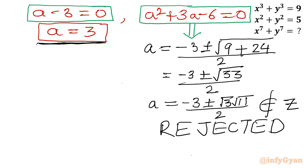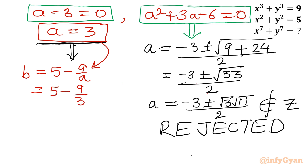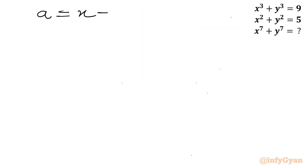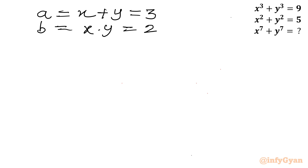Now I will calculate the value of b using a = 3. From equation 3, b = 5 - 9/a = 5 - 9/3 = 5 - 3 = 2. So b = 2. Recalling our substitutions: a = x + y = 3 and b = xy = 2. These represent the sum and product of roots.